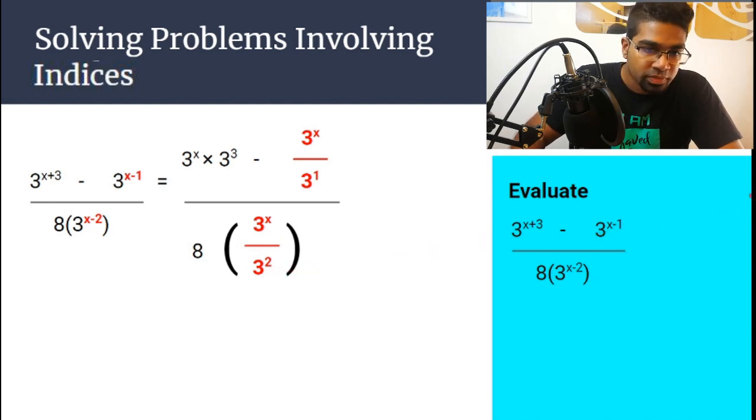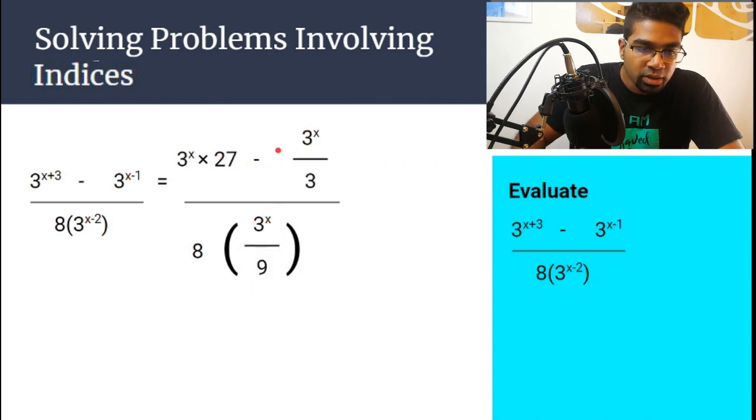So now all we have to do is simplify this. 3 to the power of 2 becomes 9, 3 to the power of 3 is 27. So we get times 27 times 9. And in order to simplify this further, the easiest way is to remove the fraction on the numerator and the denominator.